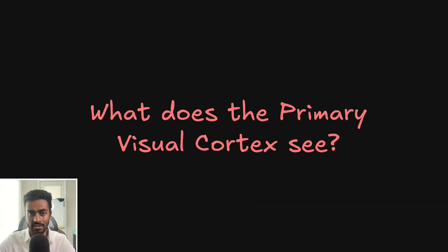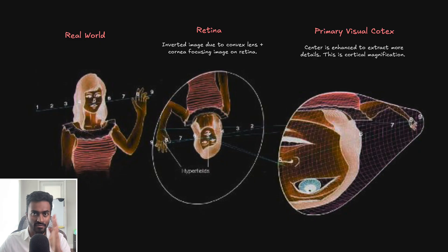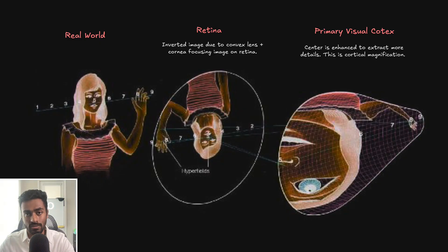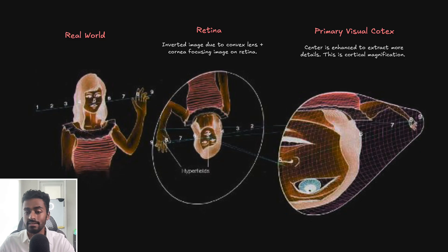What does the primary visual cortex actually see? Using a retinotopic map, we can see what information is being projected at different points of the visual pathway. If the eye is looking at a real-world image of a person waving in front of us, the image on the retina is going to be inverted due to the convex lens structure of the lens and cornea. As it passes through the visual pathway, it ends up in the primary visual cortex — specifically the left side of it.